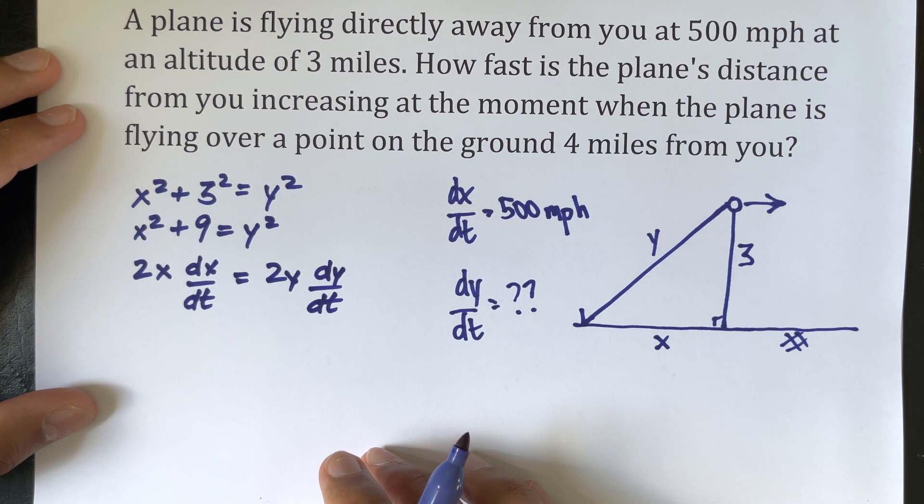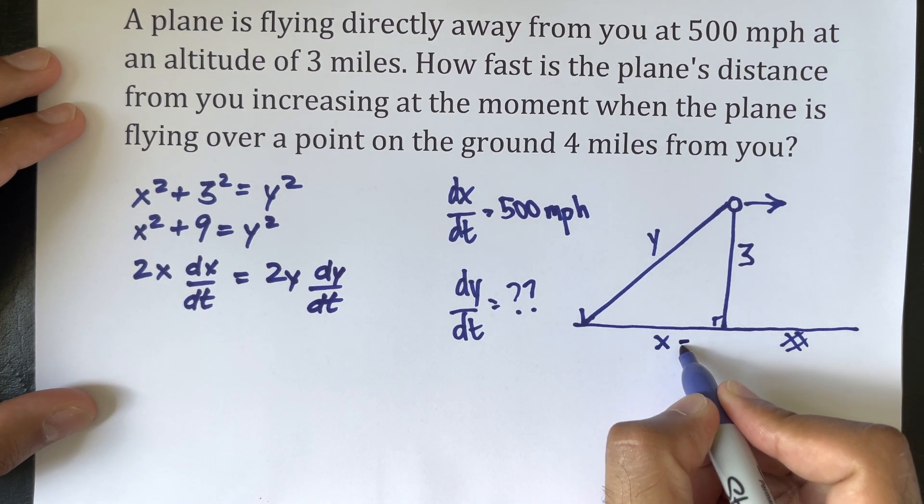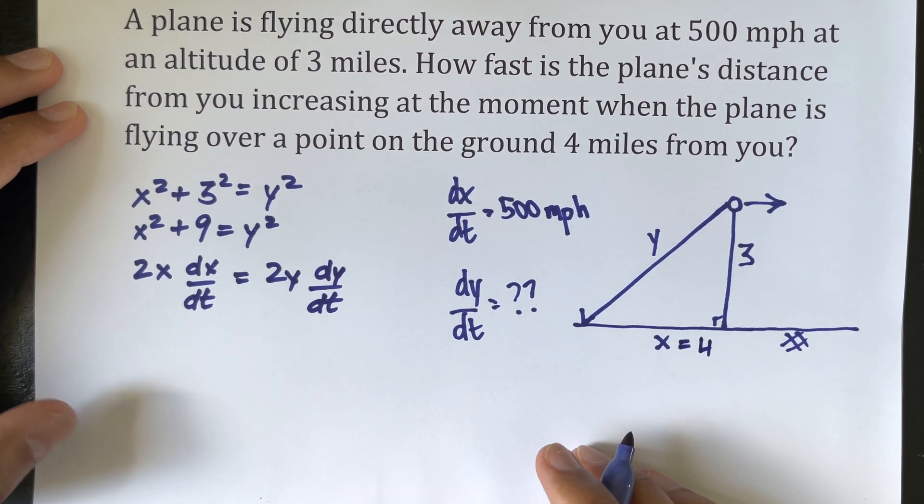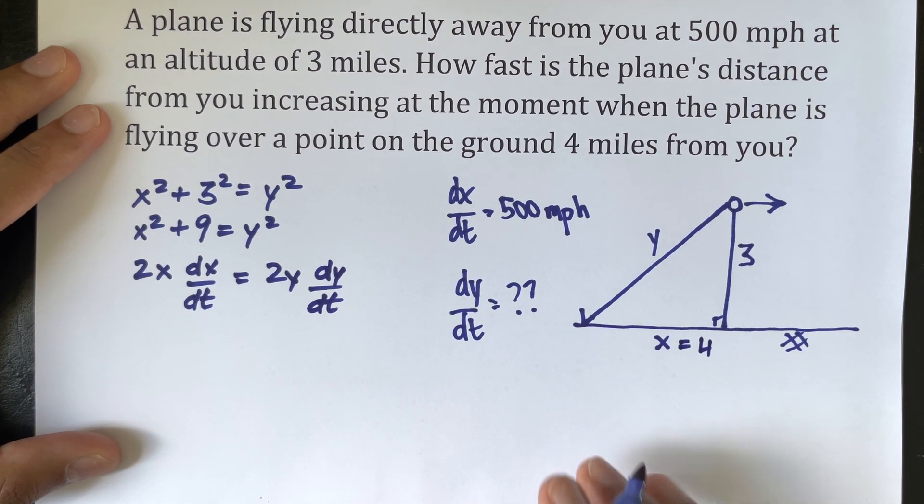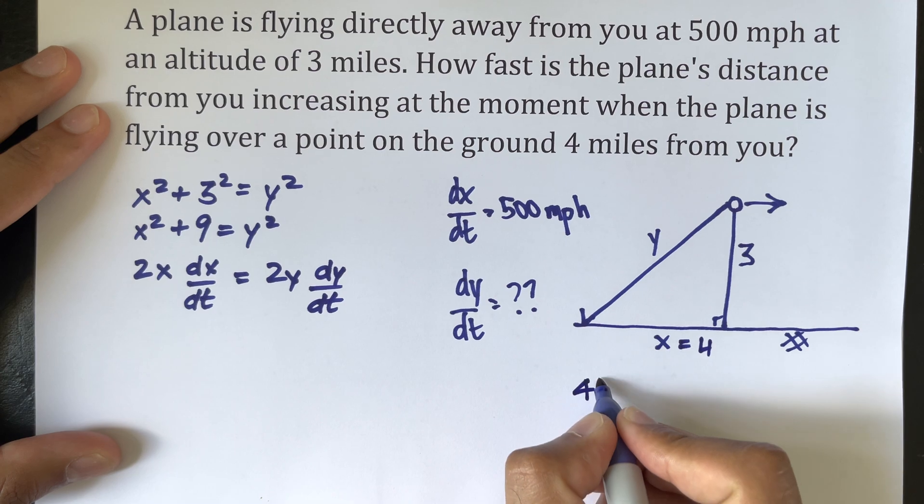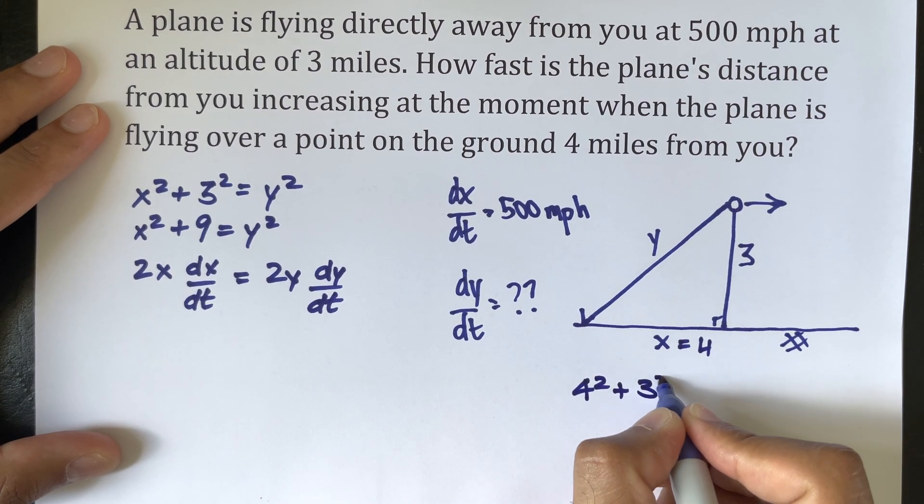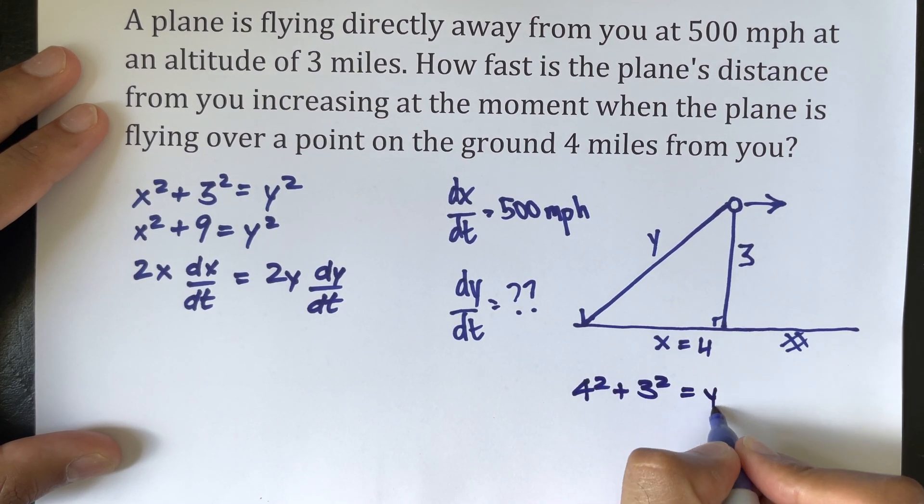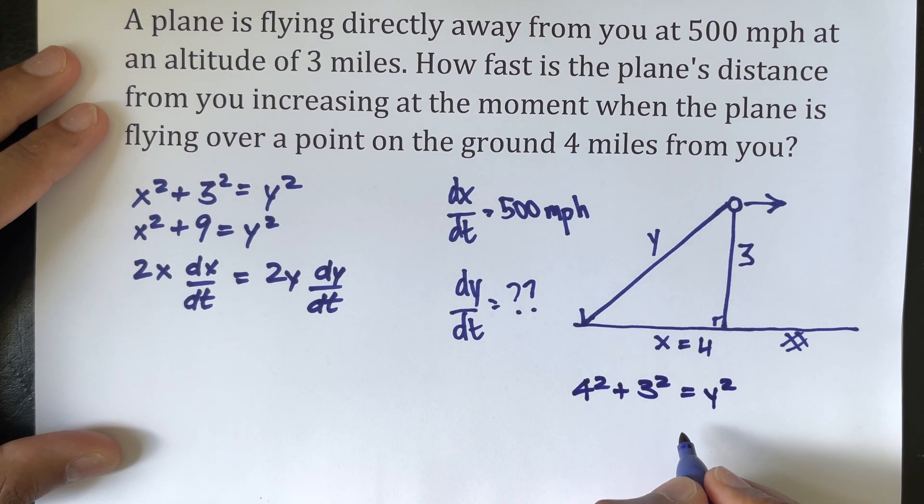And we need to know it at x equals 4. So again through Pythagorean theorem if we go 4 squared plus 3 squared we will get y squared, and doing the math we will get y equals 5.